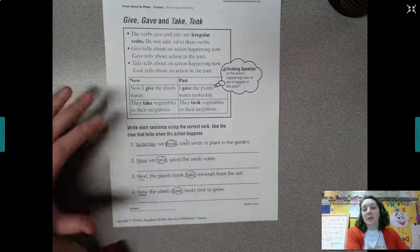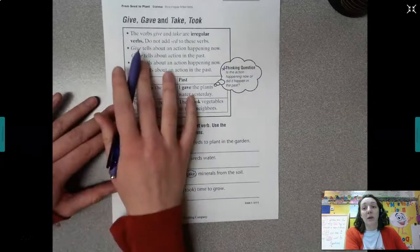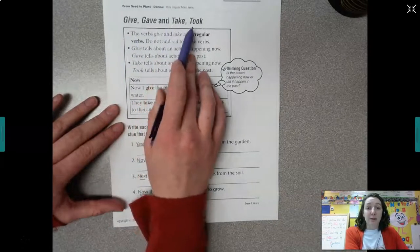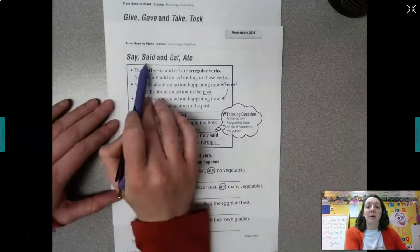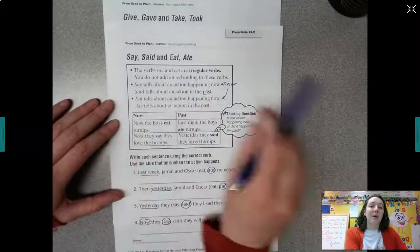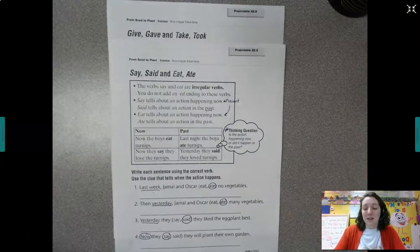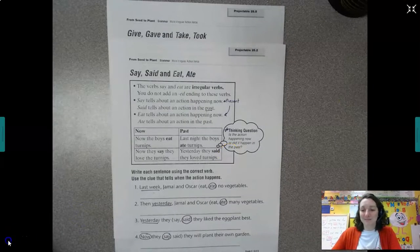So again, things that you might recognize and do automatically without thinking about. You just really want to pay attention to give being irregular in the past as gave, take being irregular as took, say being irregular as said, and eat being irregular as ate. So those are our irregular verb focuses for this week. So you'll have a page practicing that as well. Have a great rest of your day, friends. Bye bye.